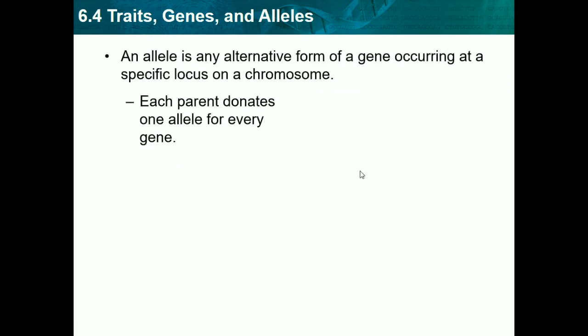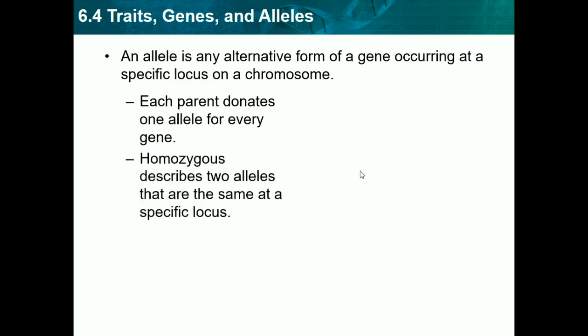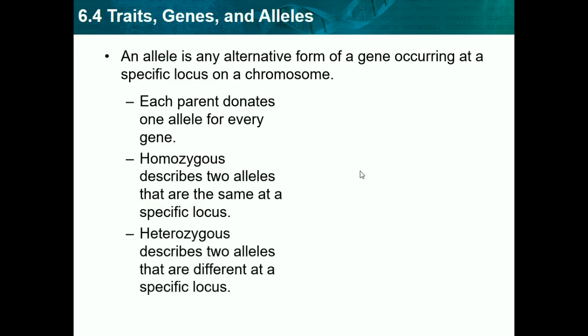Each parent donates one allele for every gene — so for every gene you have, like your eye color, your parents both donate a certain allele. Homozygous describes two alleles that are the same at a specific locus, and heterozygous describes two alleles that are different at a specific locus. In any science, homo is always the same and hetero is always different.